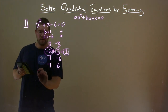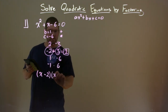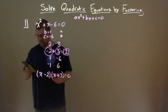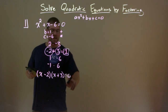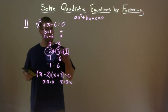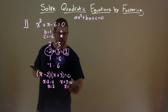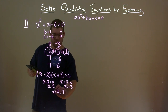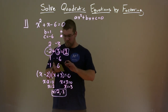We take these numbers and write x minus two times x plus three equals zero — that's how we factor this. Now we set each part equal to zero: x minus two equals zero, and x plus three equals zero. Adding two to both sides gives x equals positive two. Subtracting three from both sides gives x equals negative three. So our two solutions are x equals two and negative three.